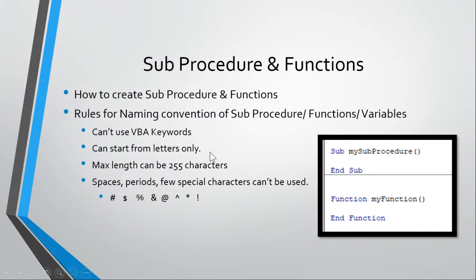These are the rules we have mentioned here for the naming convention of subroutines and functions. These are VBA keywords that you can't use while writing subroutine names. The name must start with letters only. Maximum length can be 255 characters which is very long, so no worry. You can use underscore but the name must start with letters only.